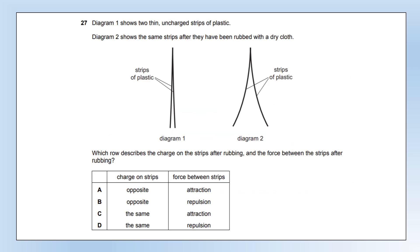Two thin uncharged strips of plastic are rubbed with a dry cloth. We can clearly see the strips are repelling each other, so they must have the same charge. Eliminate options A and B. They're repelling, so the answer is option D.